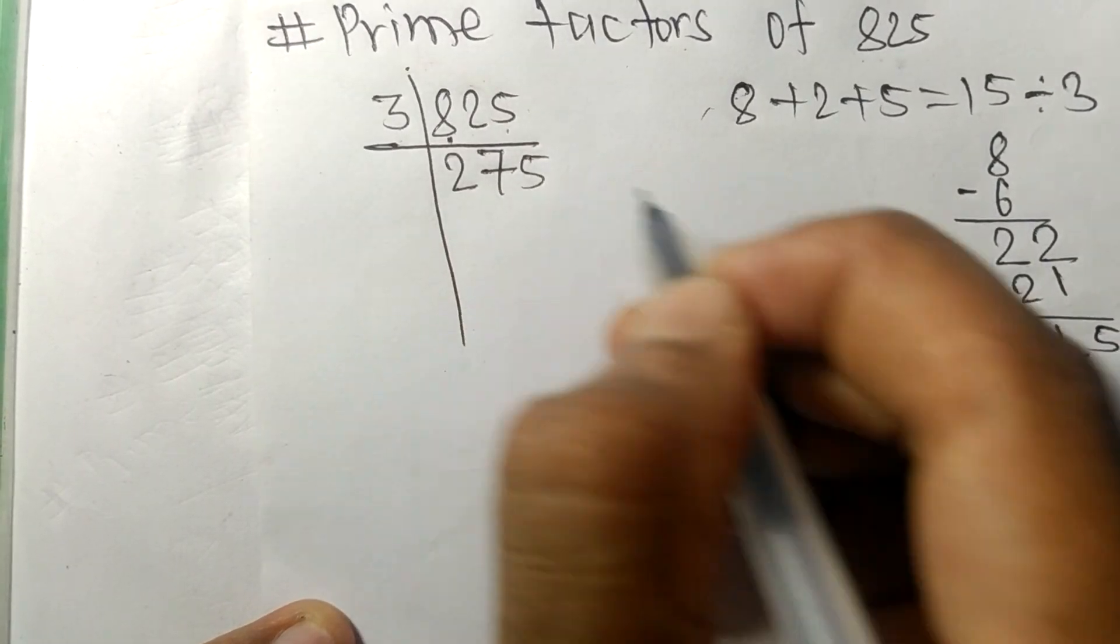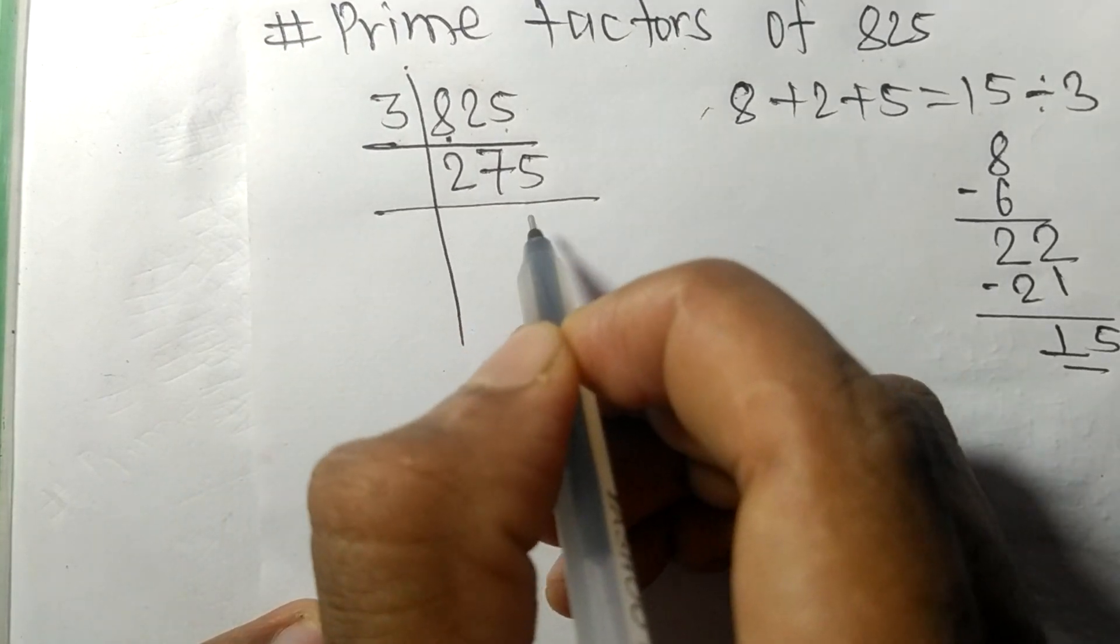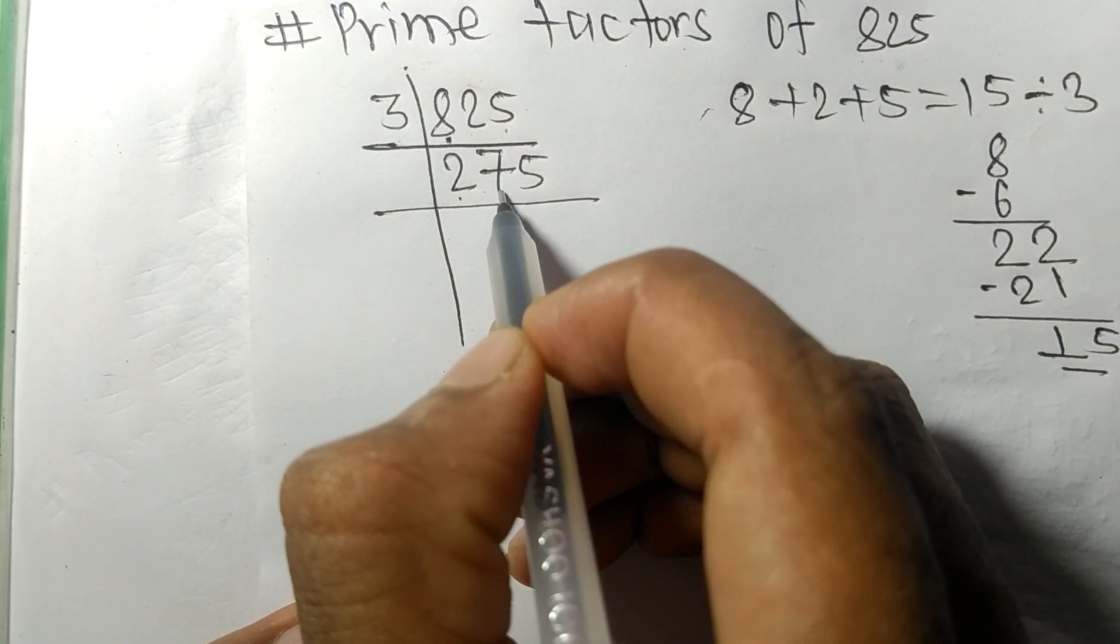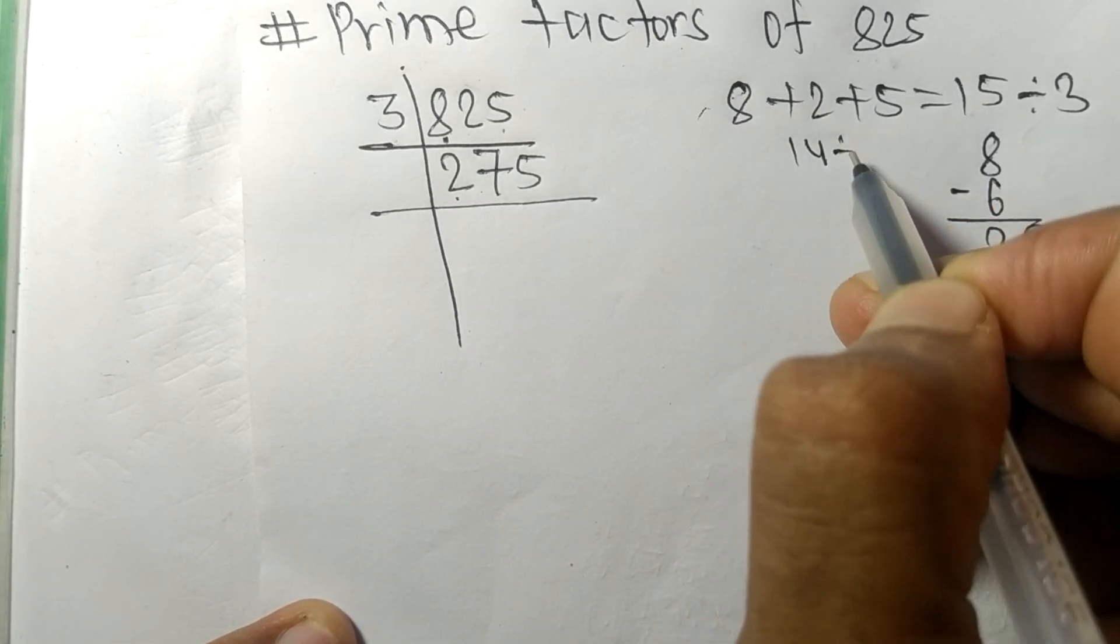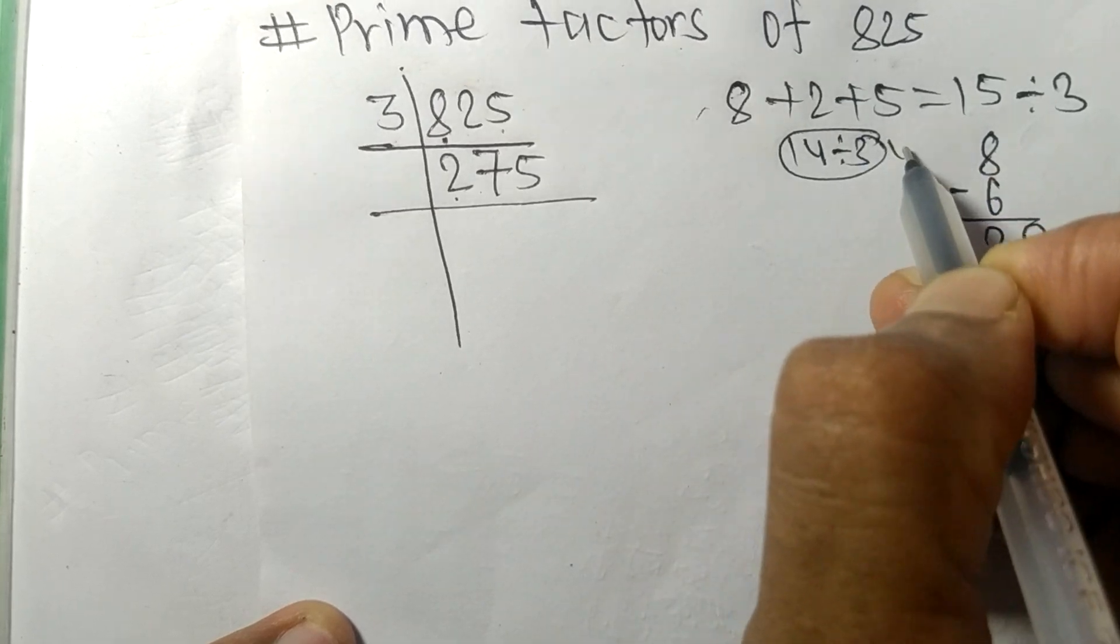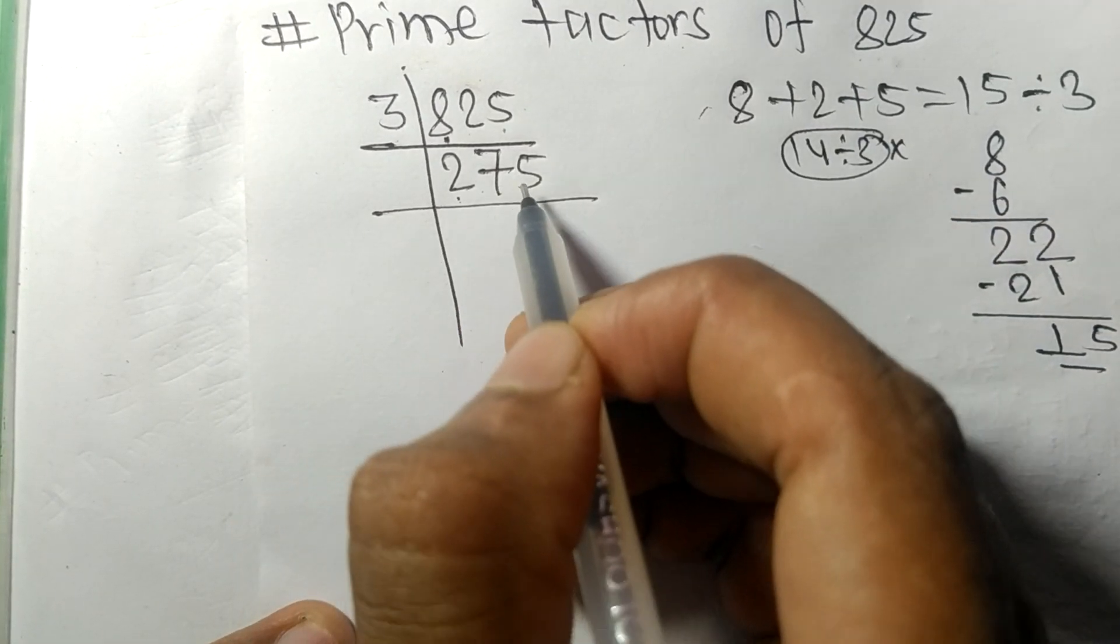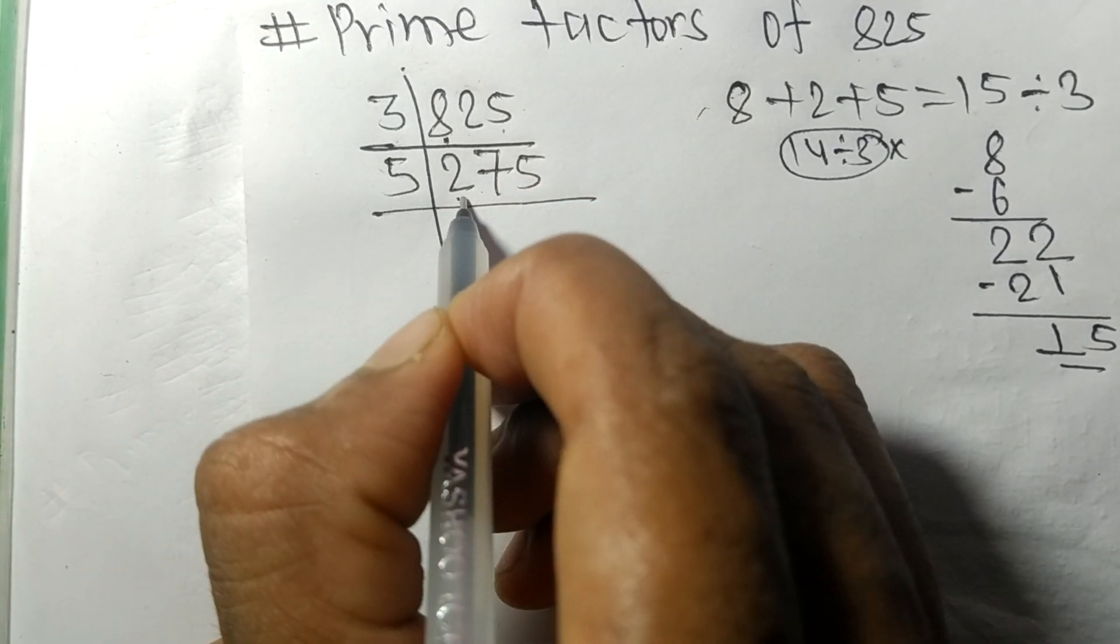Now we got 275 and its sum 2 plus 7 is 9, plus 5 is 14. And 14 is not exactly divisible by 3, so now 275 is exactly divisible by 5.